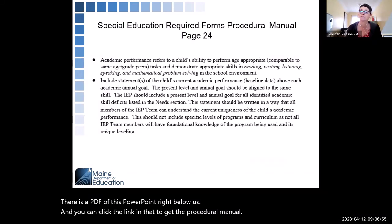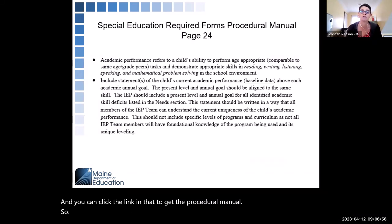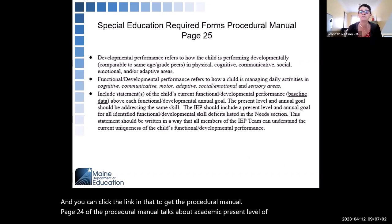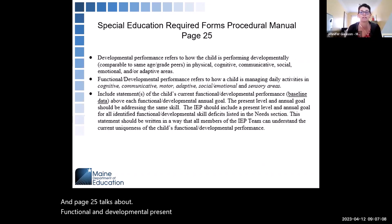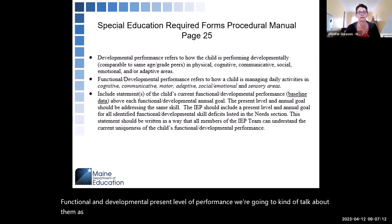Page 24 of the procedural manual talks about academic present level of performance, and page 25 talks about functional and developmental present level of performance. We're going to talk about them as one, because all the same rules apply whether it's academic or functional.